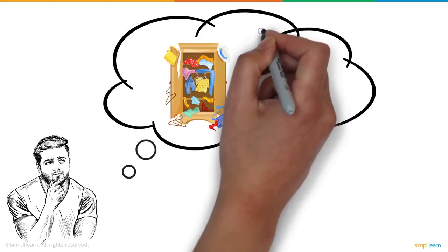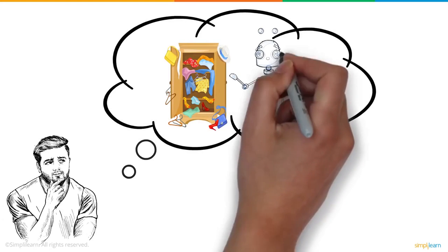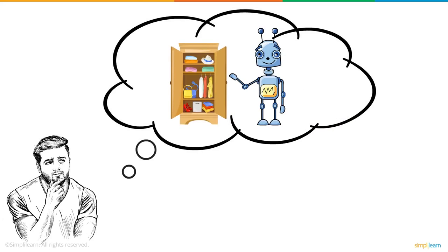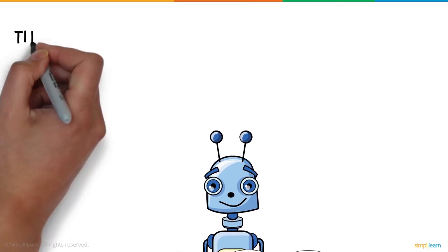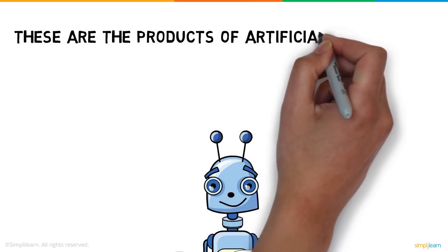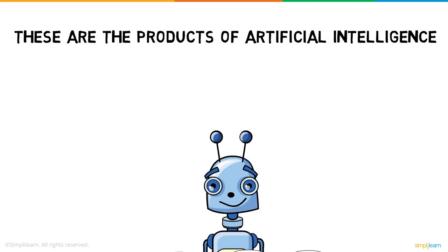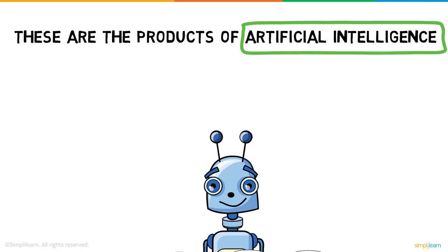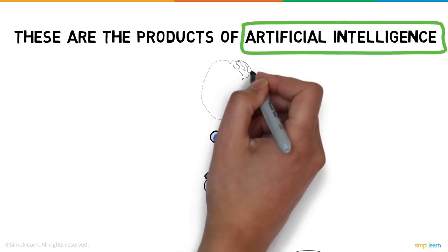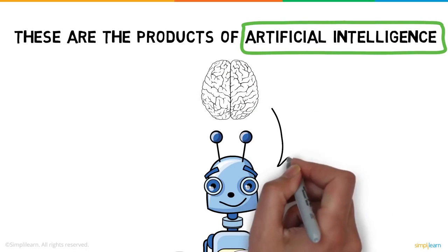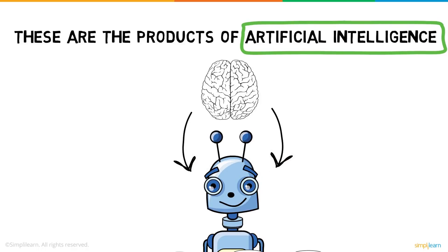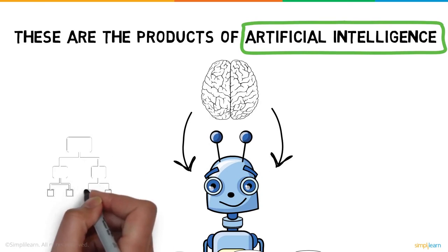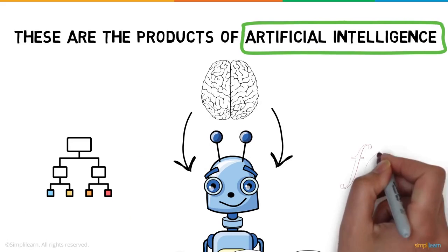Picture this: a machine that could organize your cupboard just as you like it, or serve every member of the house a customized cup of coffee. These are the products of artificial intelligence. Why use the term artificial intelligence? These machines are artificially incorporated with human-like intelligence to perform tasks as we do. This intelligence is built using complex algorithms and mathematical functions.